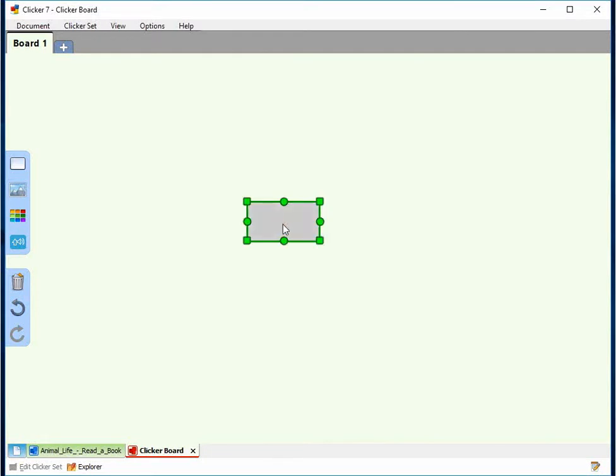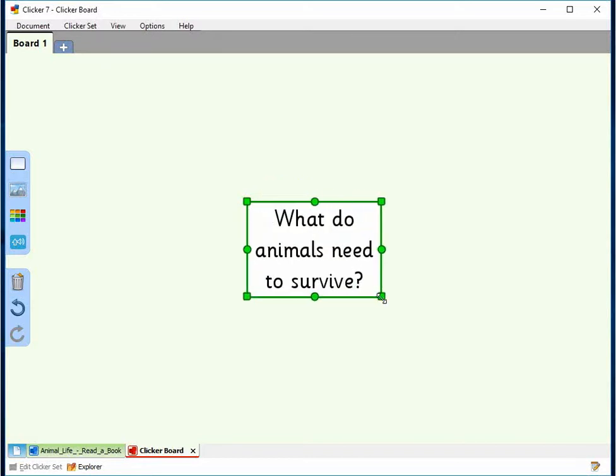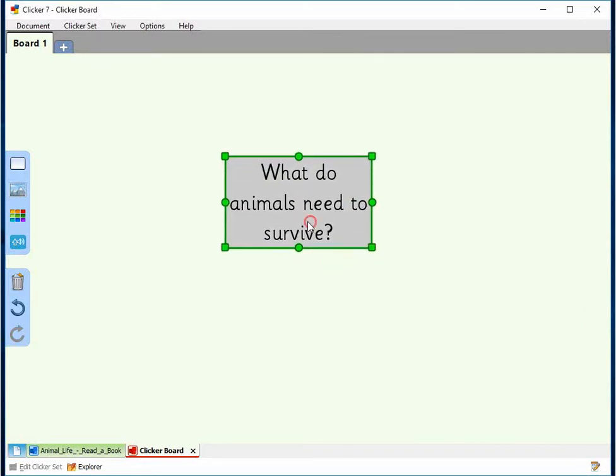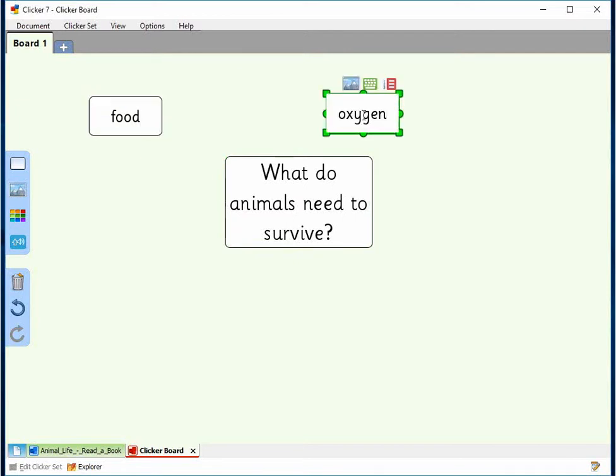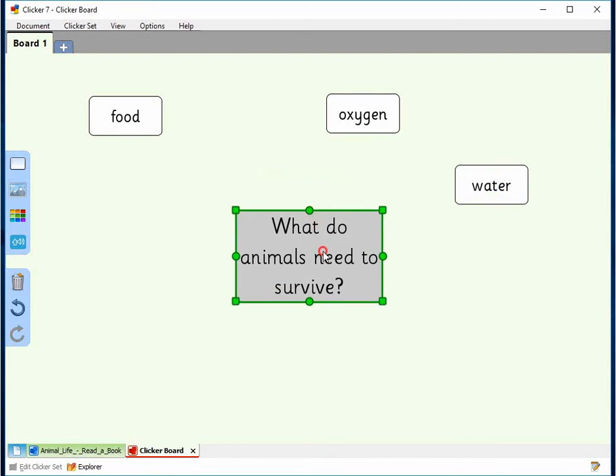You can just click anywhere on the board to write your question and then get your class to add items to the mind map. You can always use the tabs at the bottom to refer back to the book for more ideas.